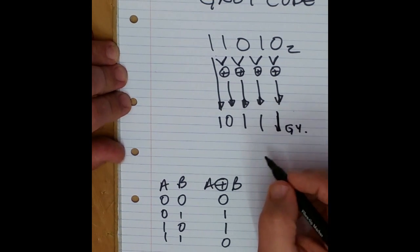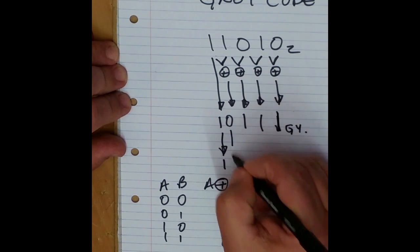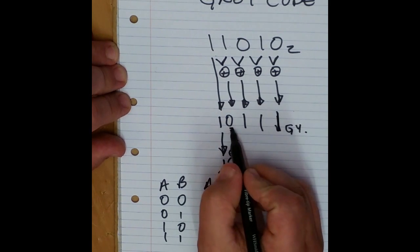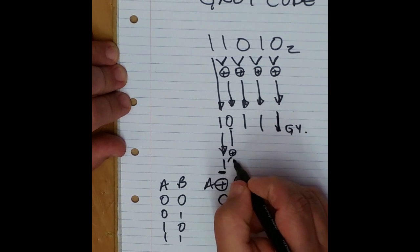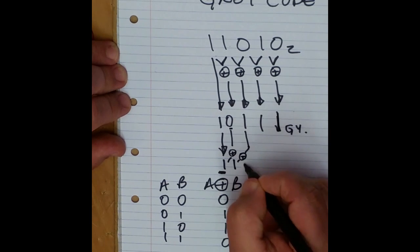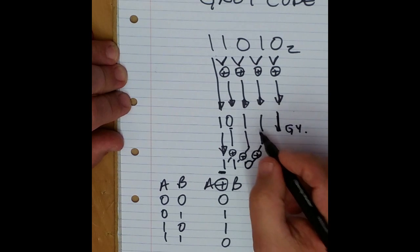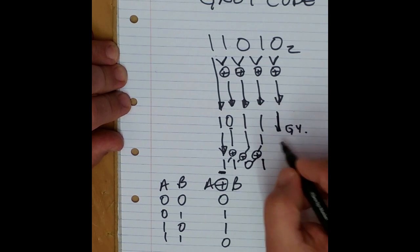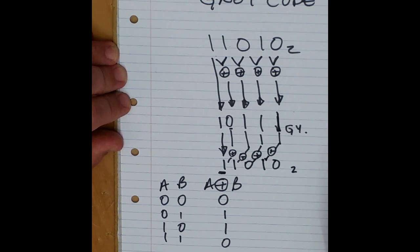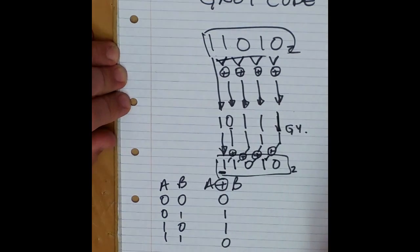Converting back is slightly different. Copy the first digit, then exclusive OR with the previous result and where you're going. So zero XOR one is one, one XOR one is zero, one XOR zero is one, one XOR zero is zero. And you can see this number is the same as the original.